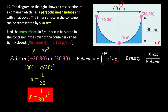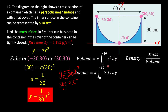We have the volume formula, but since we are integrating with respect to y, we need to express x² in terms of y. From y = (1/30)x², rearranging gives x² = 30y. Substituting into the volume integral, we get V = π∫30y dy, with the variable y, integrating with respect to y.